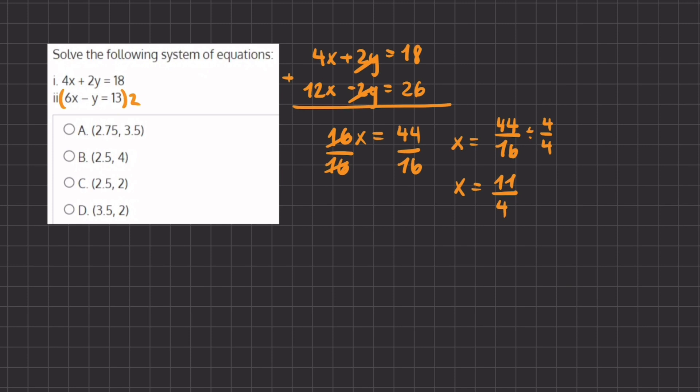All of our answers are written in decimal form, so we have to convert this fraction into decimal form. We can break this fraction up into 4 plus 4 plus 3, where we broke up this 11 into these numbers, and divide everything by 4. If we do so, we are left with x equals 1 plus 1 plus 3 over 4. When we add all of these together, we have 2.75, because 3 over 4 in decimal form is 0.75.